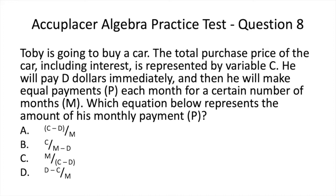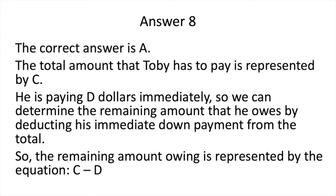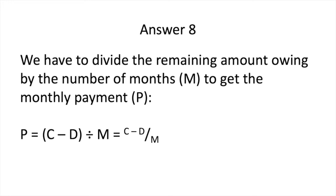Here is Question 8. Now pause to solve. The correct answer is A. The total cost — in other words, the total amount that Toby has to pay — is represented by variable C. He's paying D dollars immediately, so we can subtract that to get the equation C minus D. He then needs to divide by M months to get his final monthly payment.